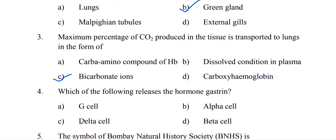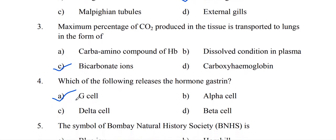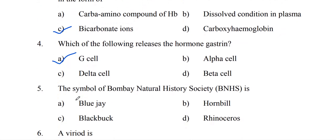Which of the following releases the hormone gastrin? G cells present in the stomach are responsible for the release of the hormone gastrin. The symbol of the Bombay Natural History Society (BNHS) is the hornbill.